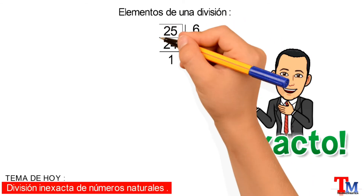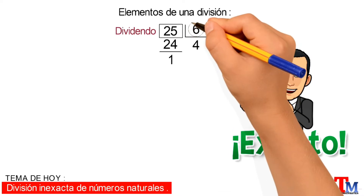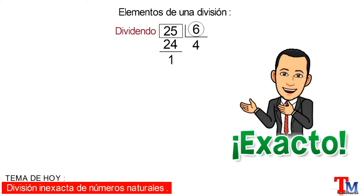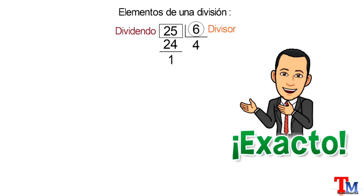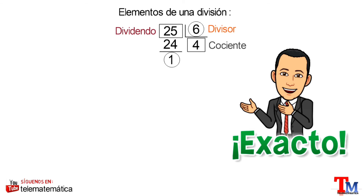En primer lugar, tenemos el dividendo. En segundo lugar, tenemos el divisor. En tercer lugar, tenemos el cociente. Y en cuarto lugar, tenemos el residuo o resto.